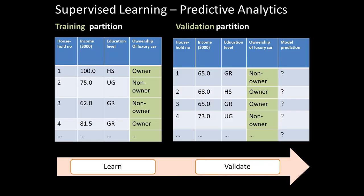To make things concrete, what we've got here is historical information. We've broken it up into two parts: the training partition and the validation partition. I've shown them as probably the same size, but they are not — usually the training partition is bigger than the validation partition.